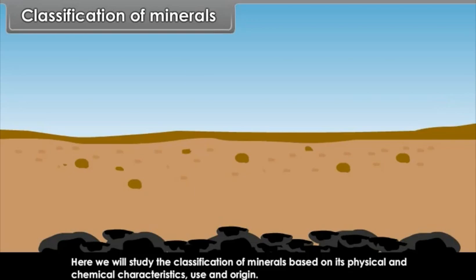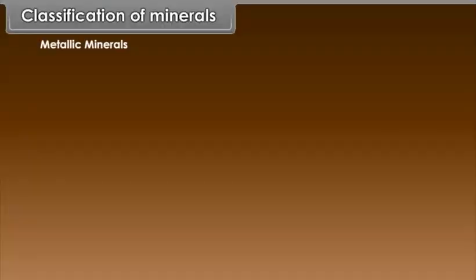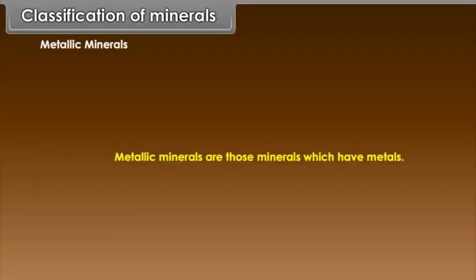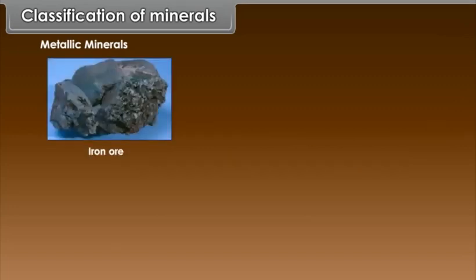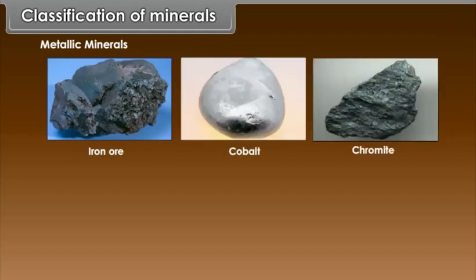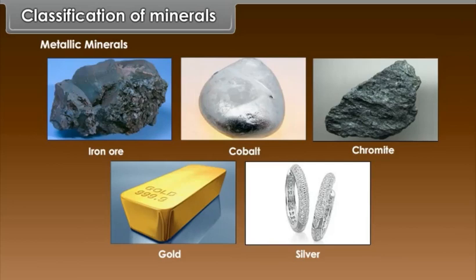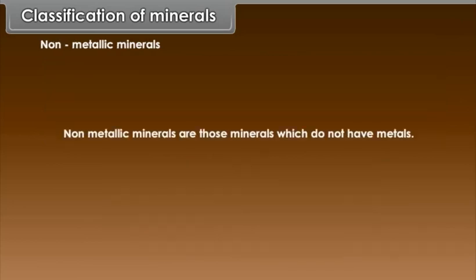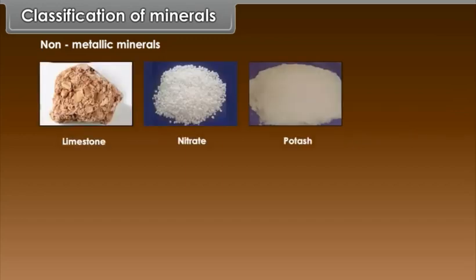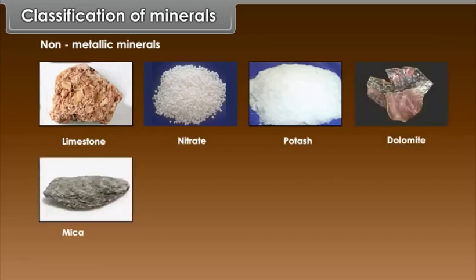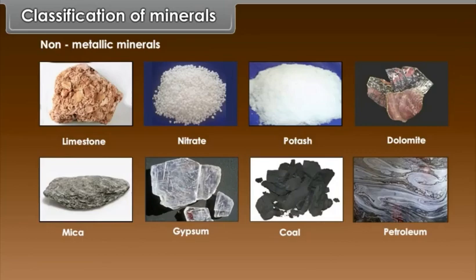Minerals are classified as metallic and non-metallic. Metallic minerals are those which contain metals, such as iron ore, cobalt, chromite, gold, silver, etc. Non-metallic minerals are those which do not have metals, such as limestone, nitrate, potash, dolomite, mica, gypsum, coal, petroleum, etc.